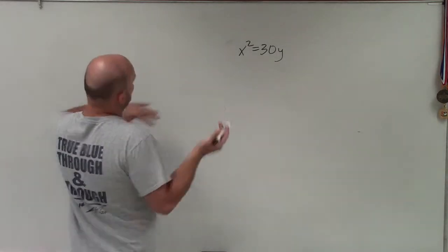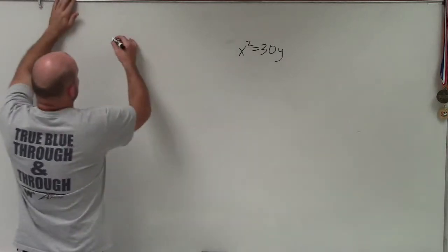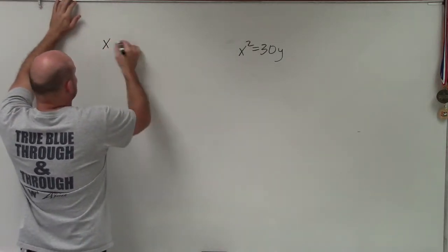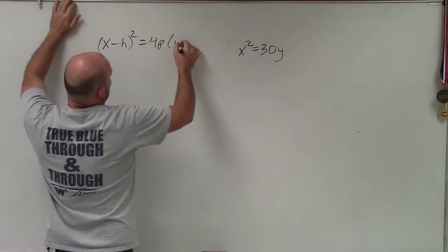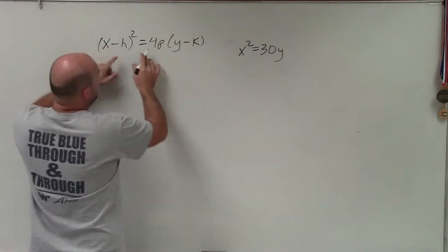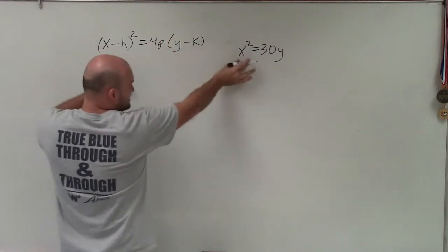To do that, we need to know our general equation. We see that we have x squared, so the equation I'm going to use is (x - h)² = 4p(y - k). Now obviously, you can see this looks much more complex than that equation, right?